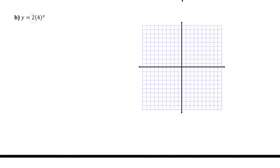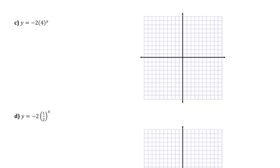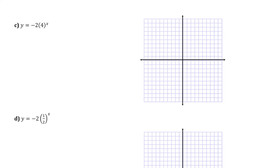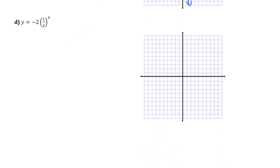The next one has an a value of two again, so we start at two on the y axis. As we move to the right it's repeatedly being multiplied by four, so my next y value is going to be up at eight. The function is going up to the right — as x gets bigger y is also getting bigger, so this is an increasing function. For the third one, the initial value is negative two, and what's happening to that negative two is it's repeatedly being multiplied by four. As I move to the right, negative two times four is negative eight — that point is lower on the function than the initial value, so this is a decreasing function. For the last one, the initial value is negative two again, and it's getting cut in half as I move to the right: from negative two to negative one to negative a half. Those points are getting higher as I move from left to right, so this is an increasing function.